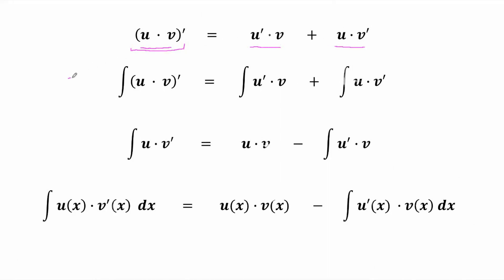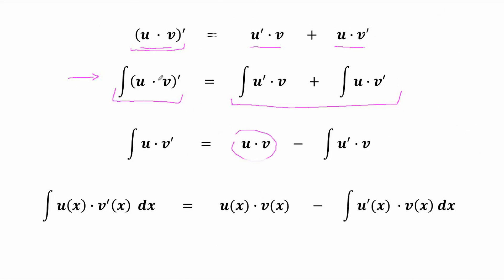When we integrate both sides of this equation, we get that the integral of the derivative is equal to the sum of those two integrals. The left-hand side of this equation is just u times v, because integration cancels differentiation. So we have this formula, which is known as the formula for integration by parts.